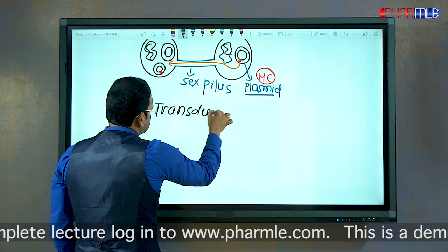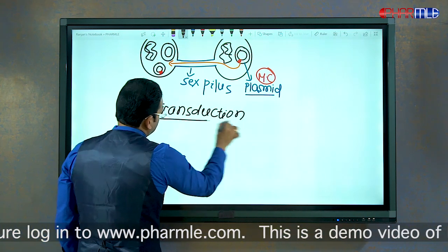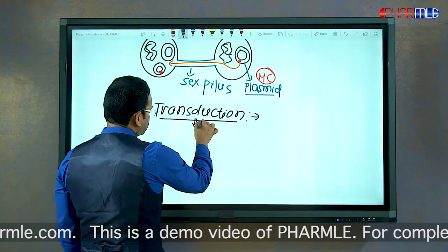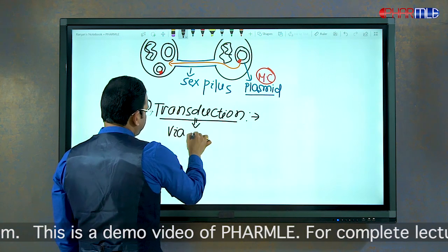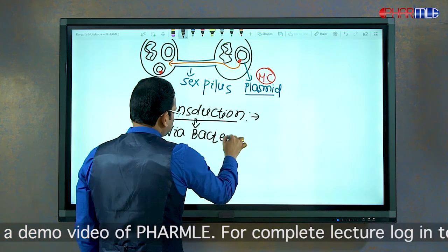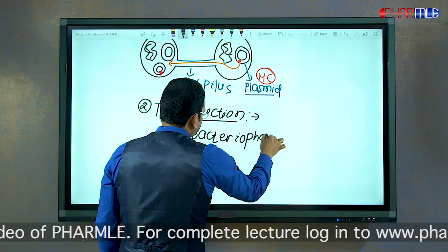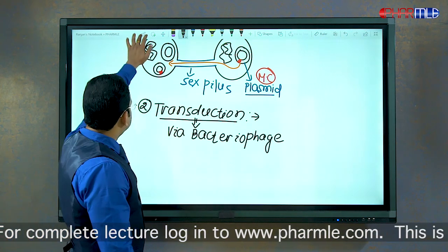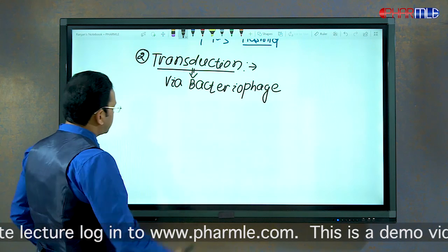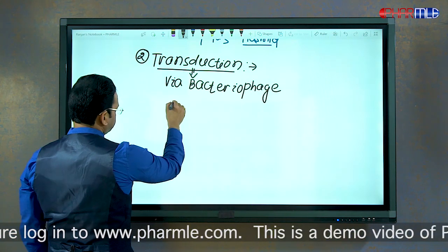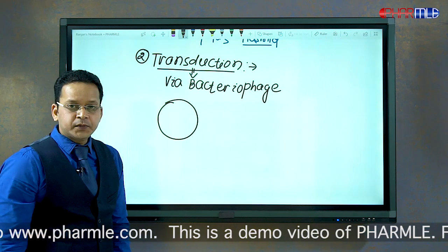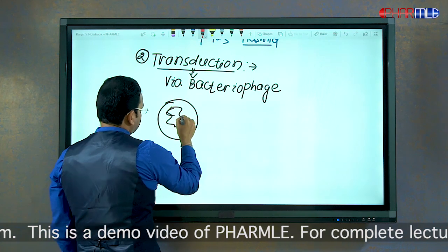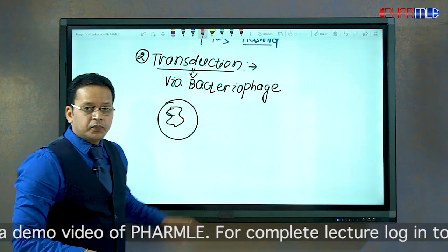The second mechanism is called transduction. Transduction is a mechanism of gene transfer via a bacteriophage. Suppose this is a bacterium and in its DNA it has some genes for drug resistance.